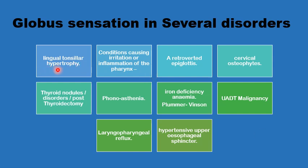Patients may have lingual tonsillar hypertrophy, irritation or inflammation of the hypopharynx, or post-nasal drip. They may have a retroverted epiglottis touching the posterior pharyngeal wall, or a prominent cervical osteophyte, thyroid nodules, or symptoms after thyroidectomy. Voice fatigue and tension in the muscles of the neck, iron deficiency and Plummer-Vincent syndrome, and more sinister conditions like early lingual or pharyngeal upper aerodigestive tract tumors. More commonly, they may have a degree of reflux, or oesophageal or pharyngeal dysmotility, particularly affecting the upper oesophageal sphincter.